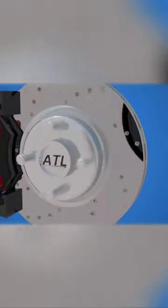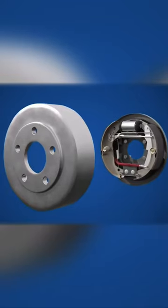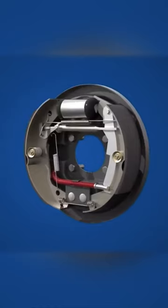A comparison can be made with effectiveness of disc brakes compared to drum brakes. Drum brakes are analogous to the radial flux machine. The disc brakes make better use of the available space to slow down the vehicle.